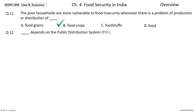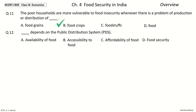Question 12: Dash depends on the Public Distribution System, PDS. The options are availability of food, accessibility to food, affordability of food, food security. Your time to choose. And the answer is food security. So, food security depends on the Public Distribution System.